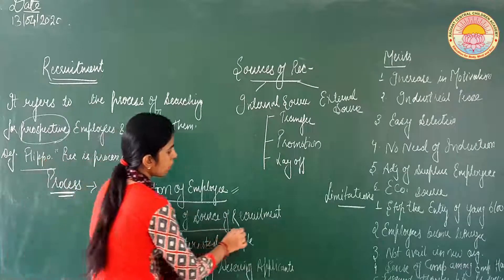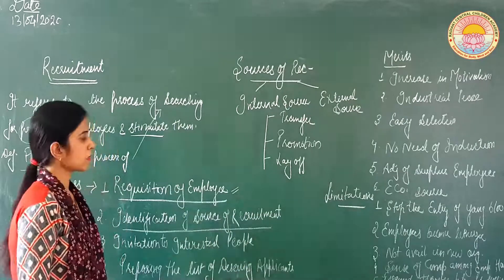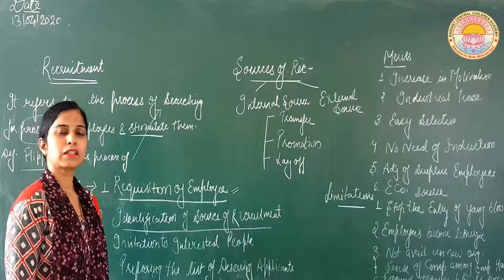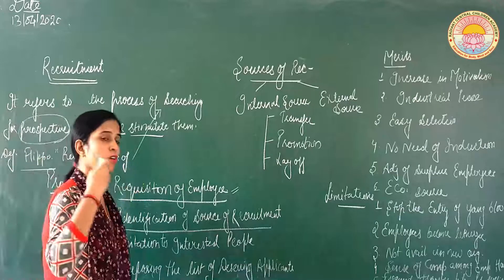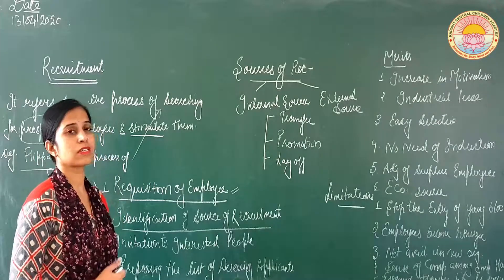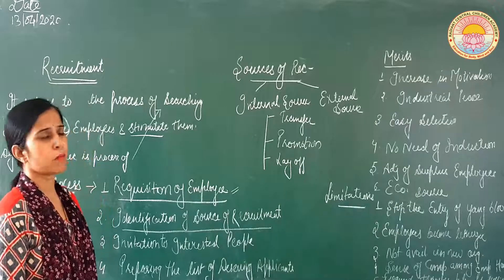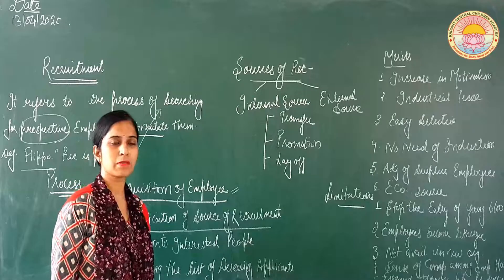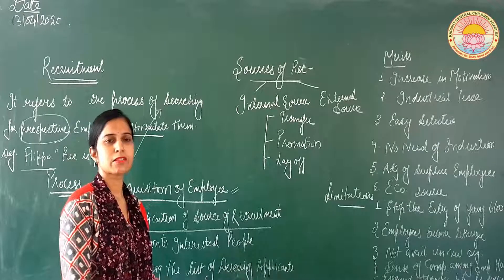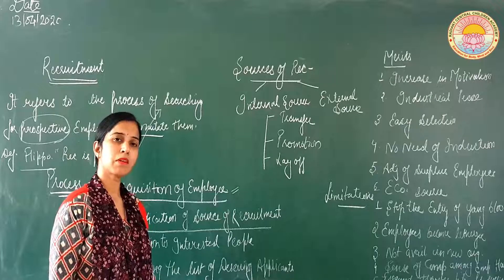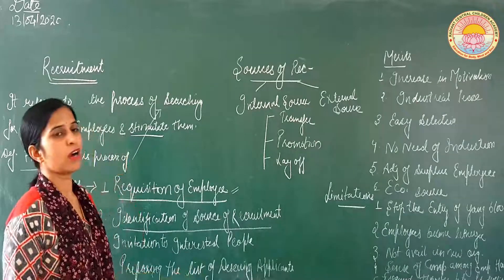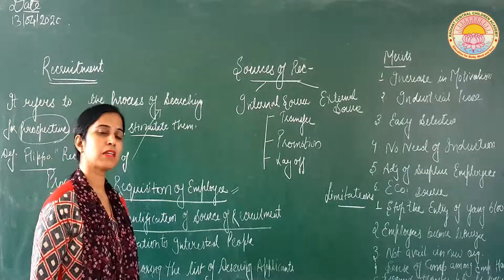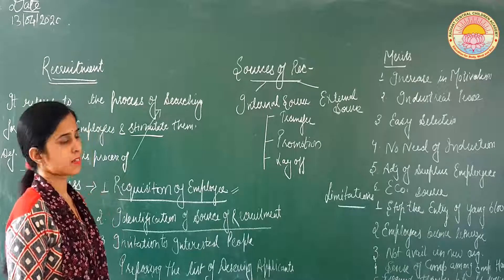Second: identification of source of recruitment. Jab personal manager ke contact mein aa gaya ki hamari organization mein kitne number of employees ki zarurat hai, toh woh sources ko identify karega ki kaun kaun se sources ho sakti hain jiske zariye hum apne employees ko recruit kar sakte hain — bohat si resources ki zariye hum apne employees ko appoint kar sakti hain.